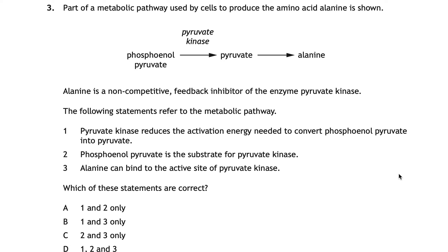For question three we have a metabolic pathway. Part of a pathway used by cells to produce the amino acid alanine is shown: phosphoenolpyruvate is converted into pyruvate through pyruvate kinase, which then gives alanine. Alanine is a non-competitive feedback inhibitor of pyruvate kinase. The statements are: one — pyruvate kinase reduces the activation energy needed to convert phosphoenolpyruvate into pyruvate; two — phosphoenolpyruvate is the substrate for pyruvate kinase; three — alanine binds to the active site of pyruvate kinase.